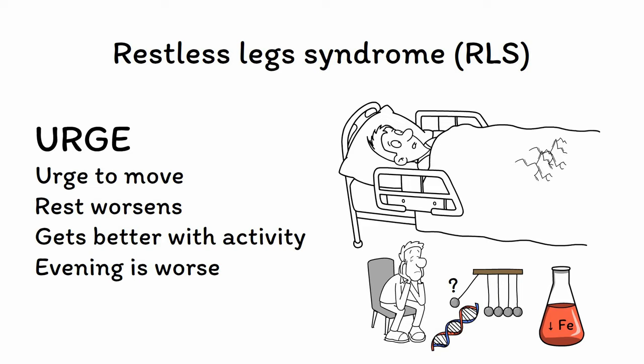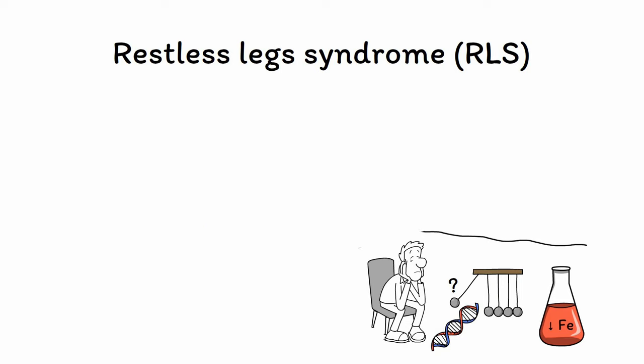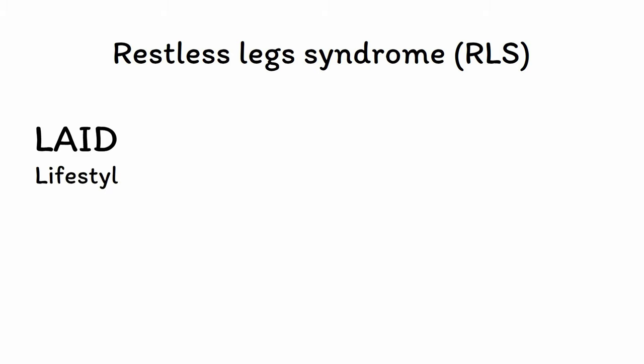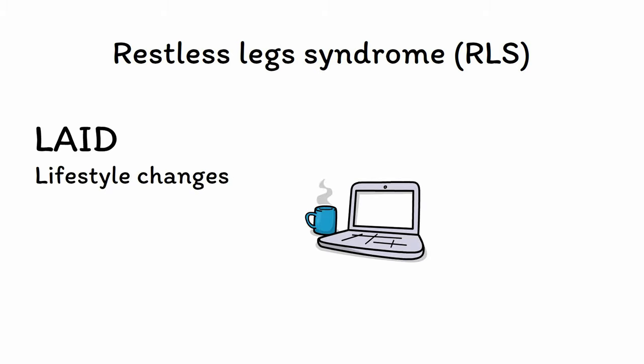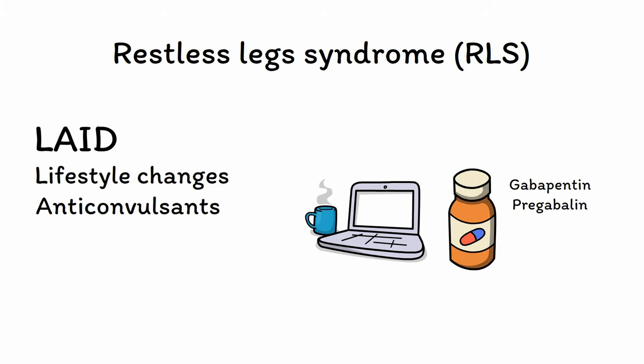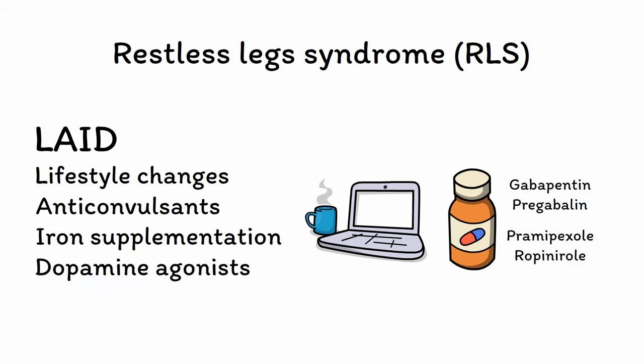For idiopathic cases, no curative treatments are available. Instead, a variety of symptomatic treatments can help. You can remember these using the mnemonic LADE, which stands for lifestyle changes including sleep hygiene, caffeine avoidance, and smoking cessation; anticonvulsants — specifically gabapentin or pregabalin — which are a good first-line option for medication treatment; iron supplementation in cases where iron deficiency is involved; and dopamine agonists like pramipexole or ropinirole, although these drugs are used less often these days as, despite being effective in the short term, they often make restlessness worse in the long term and come with some pretty severe side effects.